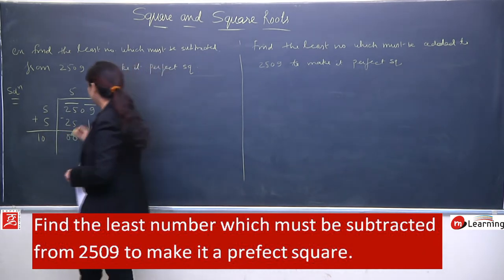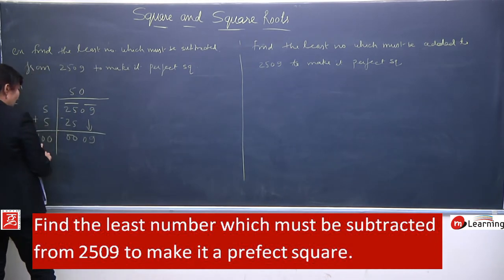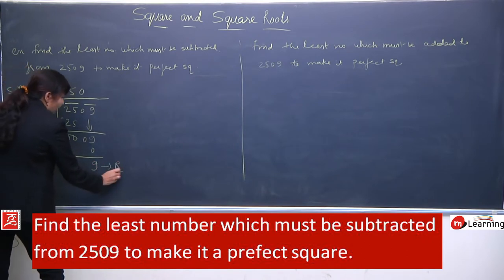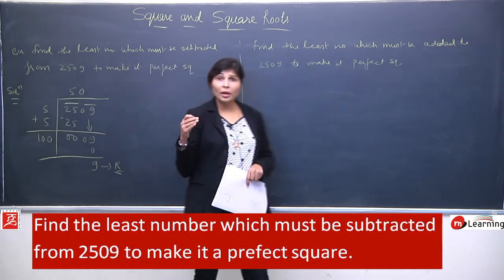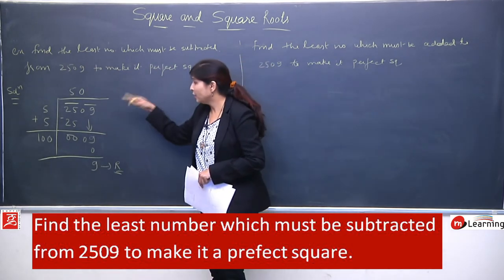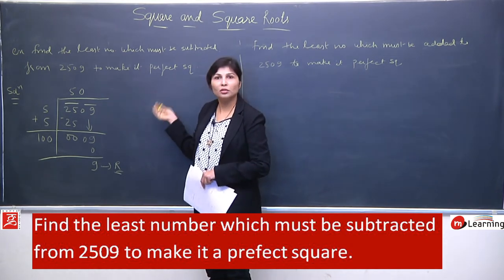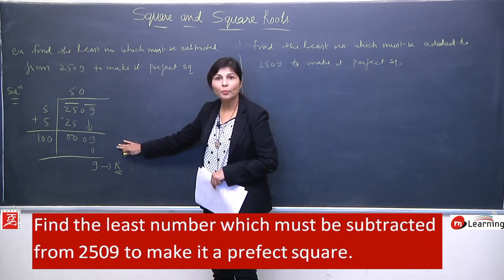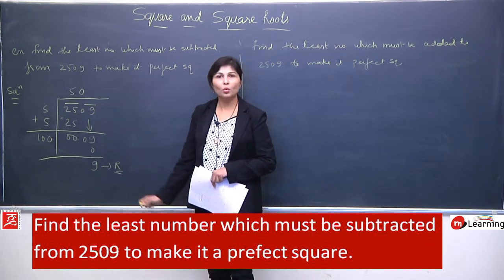Toh ab yahan se hum kya karenge? Ek 0 lagake, kyunki hum divide mein bhi nahi hain, toh similarly hum yahan karenge 100 - zeros of 0. And now your remainder is 9. Yeh ho gaya aapka remainder. Yeh 0 kyun lagaya? Kyunki yeh aage divide nahi ho raha hai, aur abhi humne decimal ya aage zeros lagane wala pattern nahi padha hai, toh hume yahan stop karna hoga. Toh humara remainder kya hua? 9.